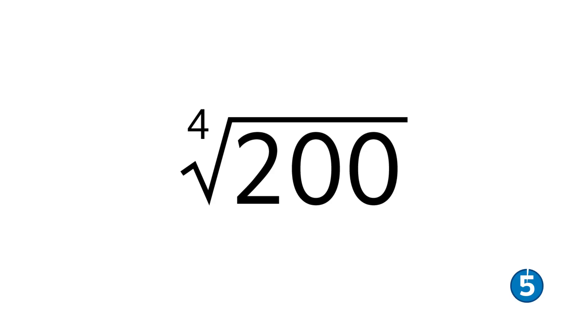I want you to practice this on your own. Pause the video and label the different parts of this expression. Think you've got it? The root symbol is the radical, the index is 4 because it's the number in the bent arm of the radical, and the radicand is the number under the radical symbol, so in this case 200. Great work!